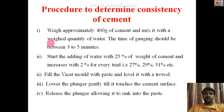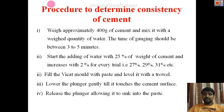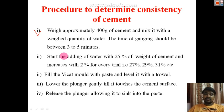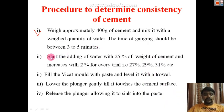Procedure for conducting consistency of cement: first take 400 grams of cement and mix it with a quantity of water. Start adding water from 25 percent using a thumb rule. The gauging time — the time of mixing when you add water to the cement — should be three to five minutes.